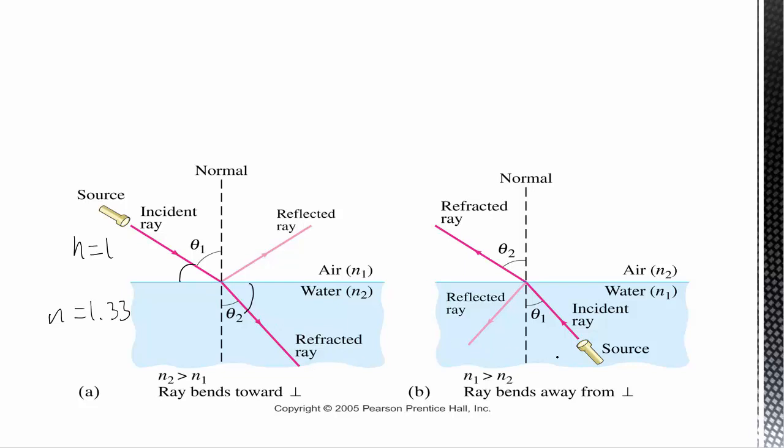If we have a flashlight in the water, the light is going to come out and then it's going to speed up as it goes into the air. And so that is going to make it tilt the other way. So in general, whenever you're going from a lower index of refraction to a higher, then the ray bends toward the normal. Whenever you're going from a higher to a lower, it bends away from the normal.